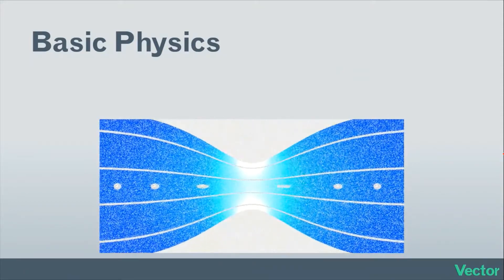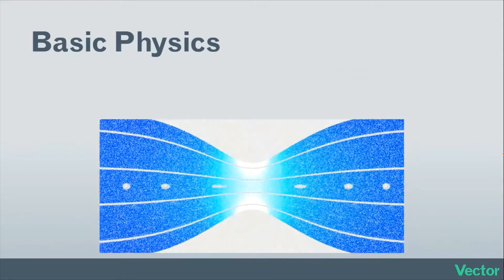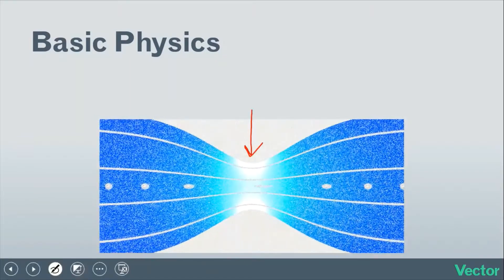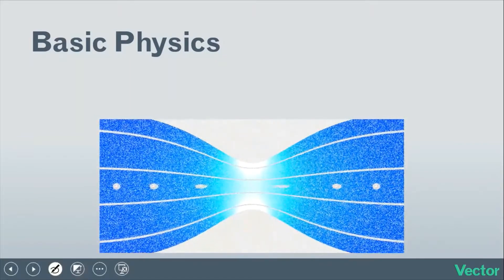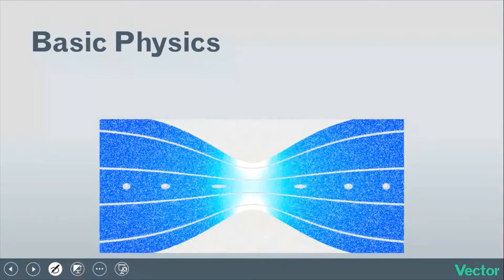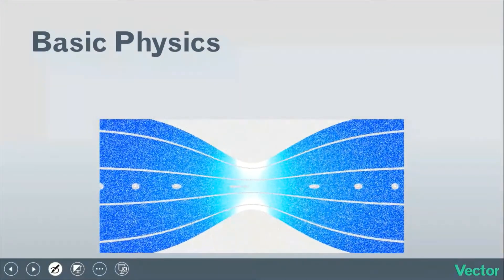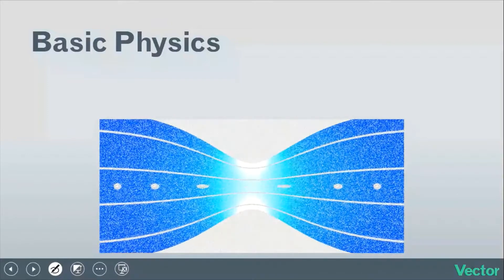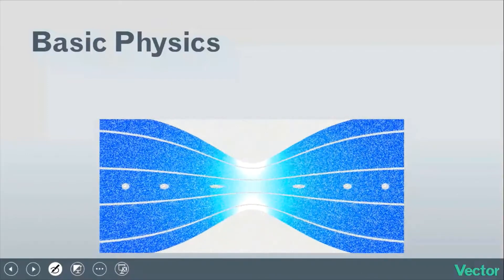This is a venturi tube - a device that's narrowed in the middle, designed to speed up the flow of a fluid. When a fluid flows through a venturi tube, two laws of physics it must obey are conservation of mass, which says that mass cannot be created or destroyed, and the continuity equation.